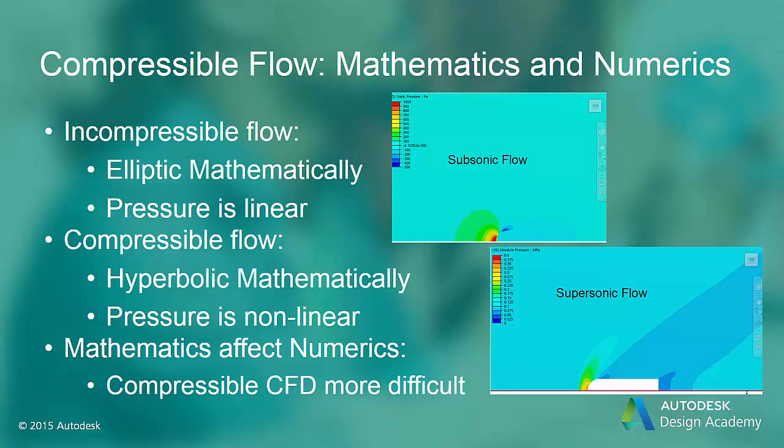You can see these two effects in the pressure results shown for both an incompressible or subsonic flow and a compressible or supersonic flow. Note the bubble shape in the pressure results for the subsonic flow showing that the pressure gradually adjusted to the airfoil. For the supersonic flow, the pressure contours are flattened showing that the flow had to adjust over a much shorter space.